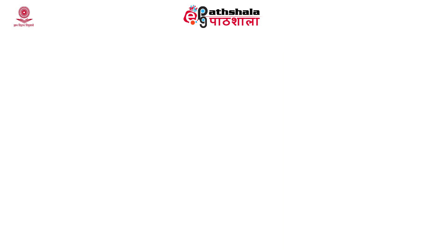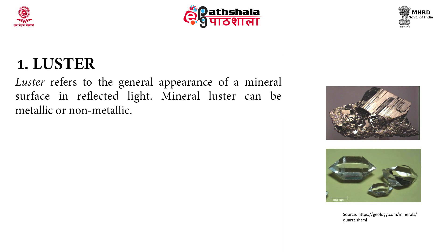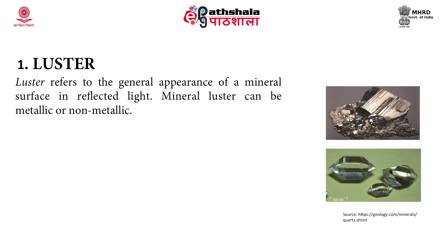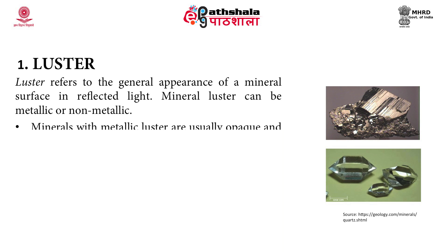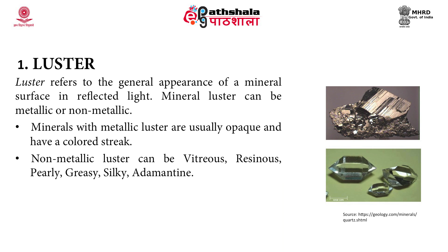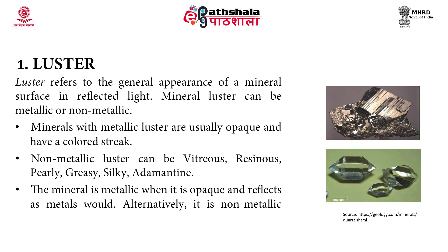Let's see a few of the properties in detail. Number one is lustre. Lustre refers to the general appearance of a mineral surface in reflected light. Mineral lustre can be metallic or non-metallic. Minerals with metallic lustre are usually opaque and have a coloured streak. Non-metallic lustre can be vitreous, resinous, pearly, greasy, silky and adamantine. The mineral is metallic when it is opaque and reflects as metals would. Alternatively, it is non-metallic when the mineral does not reflect light.